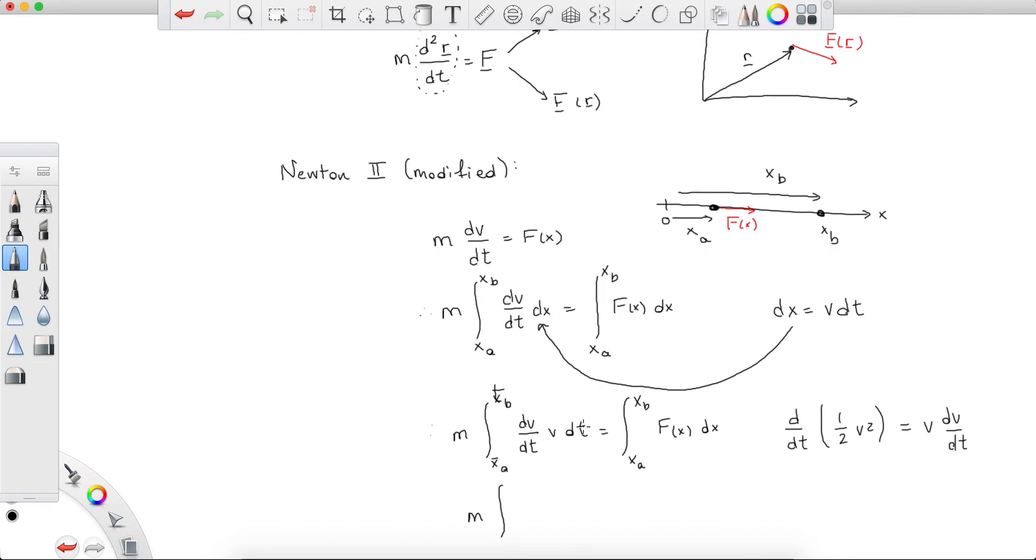So this integral becomes m the integral, okay, here is the first thing: since we changed our integration variable, we should also change our limits, our upper and lower limits of integration. So tb is the time at which the particle is at position b and xb, and ta is the time at which the particle is at position xa. So this becomes the integral from ta to tb of d/dt of one half v squared dt.